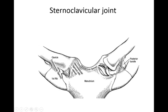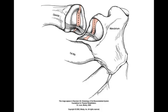It does have an articular disc in between it. The disc serves the purpose of deepening the articulation, increasing the stability of the joint, and also helps to diminish the wear and tear of the joint. This is a saddle joint, and it does have three degrees of freedom.